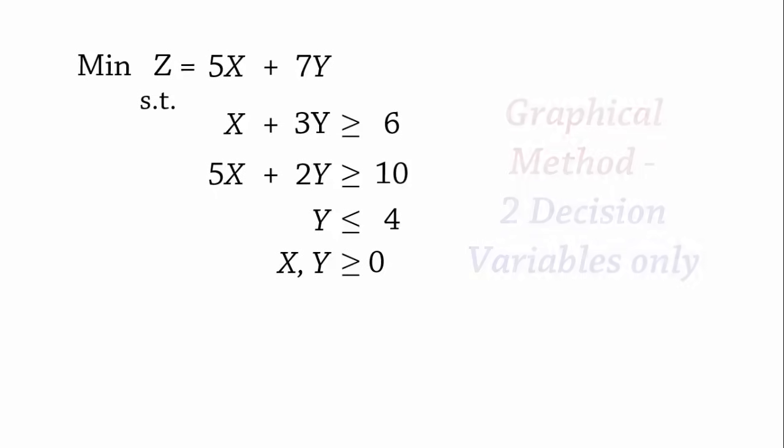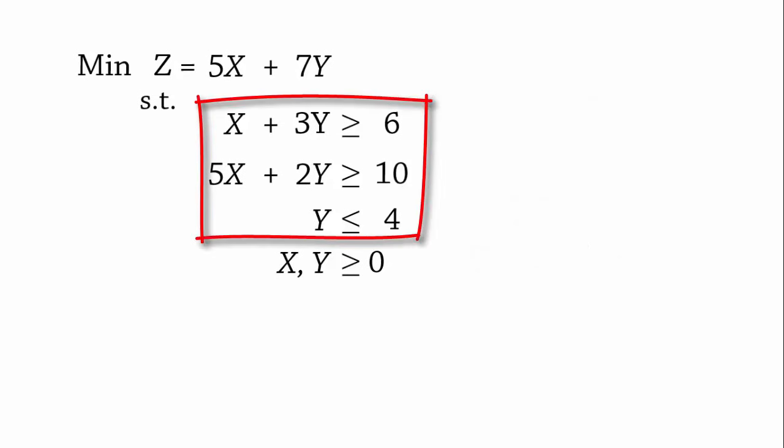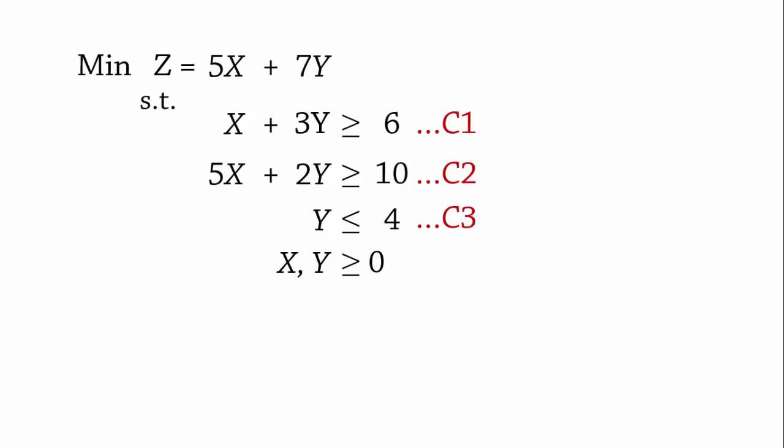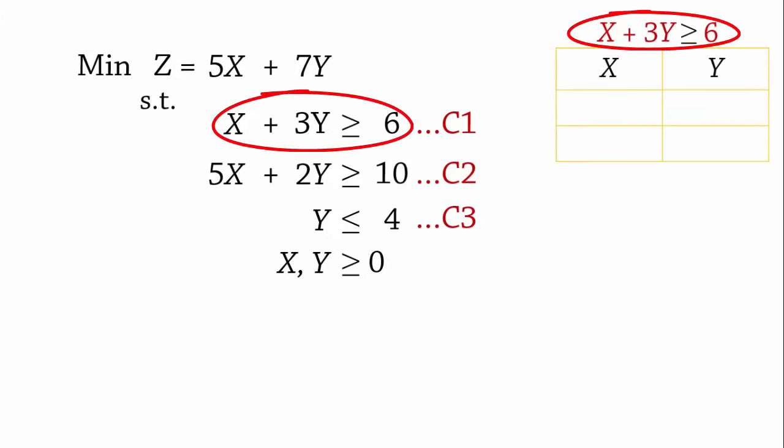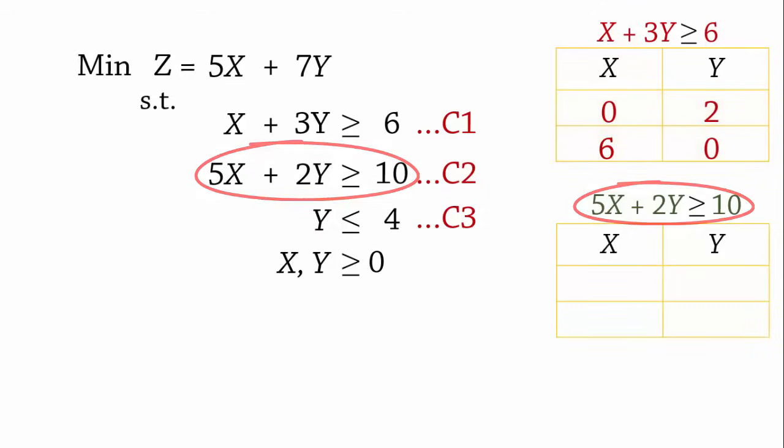We start by finding points for the constraint lines. Let's label them C1 to C3 for reference purposes. For constraint 1, when x equals 0, y equals 2, and when y equals 0, x equals 6. For constraint 2, when x equals 0, y equals 5, and when y equals 0, x equals 2.